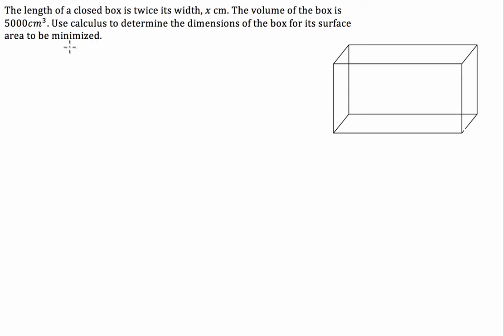So first off the bat we've got this minimised thing here. Basically what we're looking for is a function and we've got to find its turning point. The function is going to have to be to do with surface area, so we're going to have to find some sort of rate of change in surface area and that's going to have to equal zero. I've drawn a box over here to start with because I like to visualise these problems.